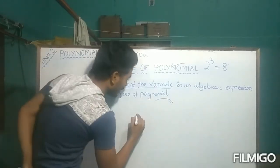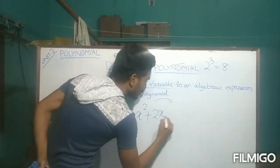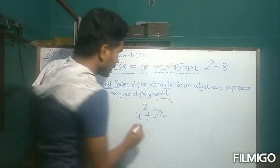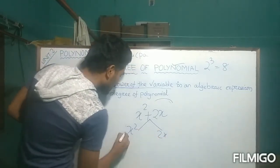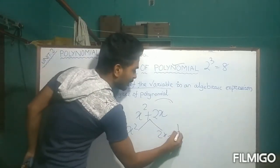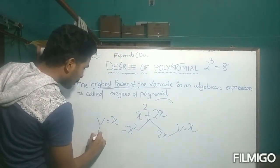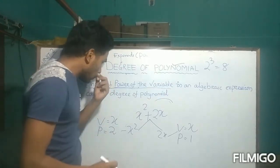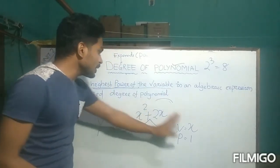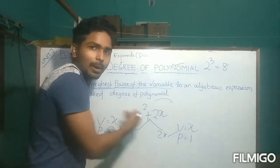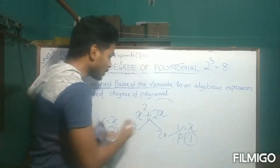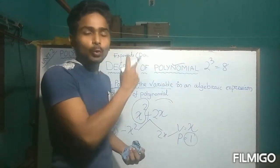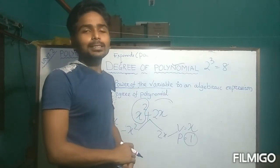Suppose we have X² + 2X. It is a binomial with two unlike terms. For X², the variable is X with exponent 2. For 2X, the variable is X with exponent 1. Comparing these two terms, the highest power is 2. So the degree of this binomial expression is 2.